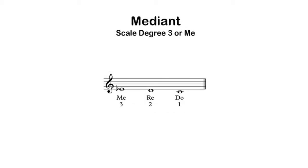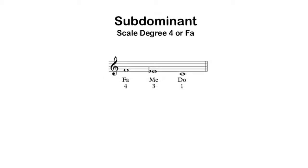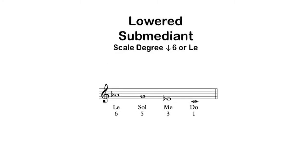For the mediant, the pattern is simply an inflection of scale degree 3, moving back down to scale degree 2 and scale degree 1, very similar to how it happens in the major mode: ME, RE, DO. Scale degree 4, the subdominant, is also very similar to its counterpart from the major mode: FA, ME, DO — the difference being instead of a half step between scale degree 4 and 3, we now have a whole step. And finally, the pattern for the lowered 6th scale degree, or lowered submediant: SOL, ME, DO — very similar to the pattern for LA from the major mode.